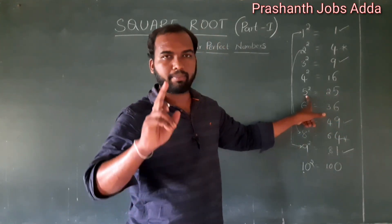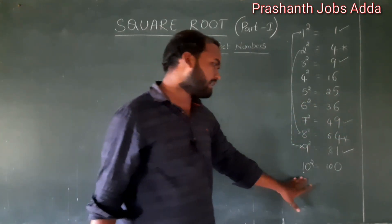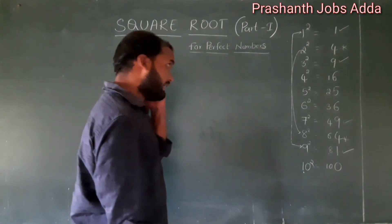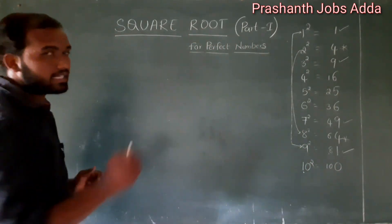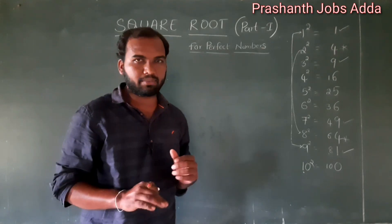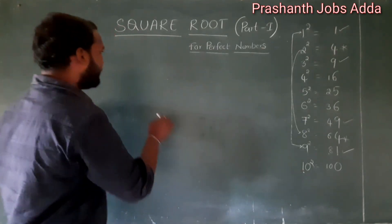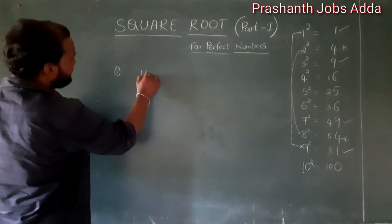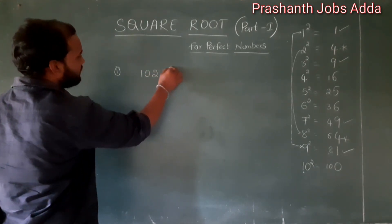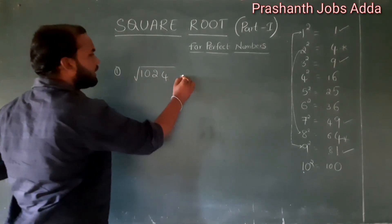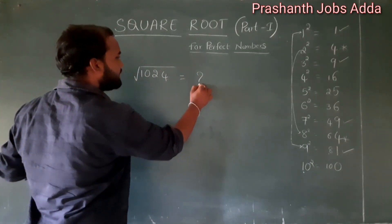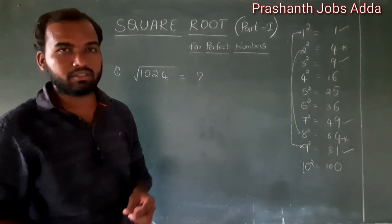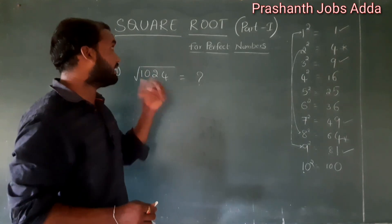If the last digit is 5, there is only one possibility — 5. If the last digit is 0, there is only one possibility — 0. Now, question number 1: find the square root of 1024. Options are given, for example 1, 2, 3, 4 with 1024.